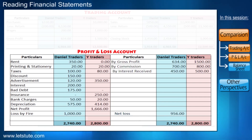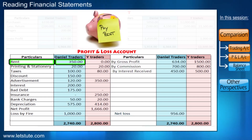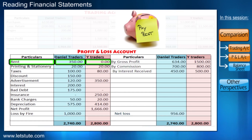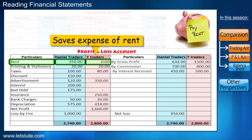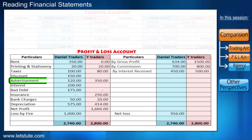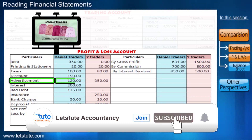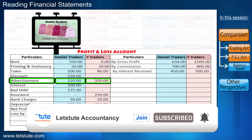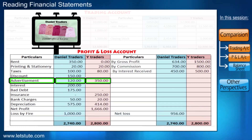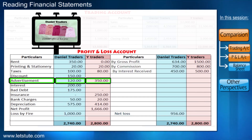Let's now look at their profit and loss account expenses. We can see Daniel Traders needs to pay rent whereas Trader Y is not paying any rent, so they may have a place of their own or may be conducting business from home. For advertisement, Daniel Traders spent 120, while Trader Y is spending more than twice that amount, which is actually a smart move. Daniel Traders may have to keep this in mind and advertise more during the next year.